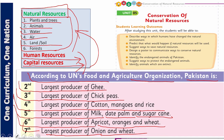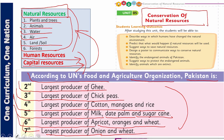Pakistan is also the sixth largest producer of apricots, oranges, and wheat, and the seventh largest producer of onions. My dear students, to maintain this position, to compete with the international world, and to make our country the best, we need to conserve our natural resources. We must put our heads together — sar jod ke baithna chahiye — and we must be proud of Pakistan and Pakistani citizenship.